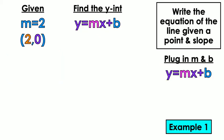So this is the information that we're given. I have given to me is my point, which is M equals 2. And the point, sorry, which is my slope, M equals 2. And then my point, which is 2, 0.